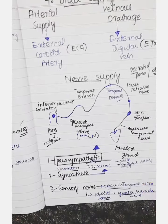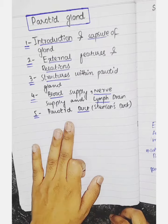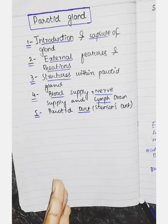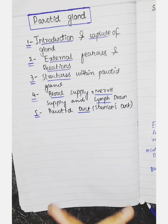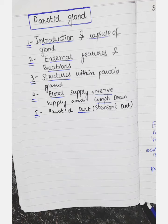So that was today's video covering blood supply, nerve supply, and lymph drainage of the parotid gland. The next video, inshallah, will be on the last topic — the parotid duct, also called Stensen's duct. Stay connected to my channel, share the video with others if you found it helpful, and let us know in the comments. Take care of yourself, thank you.